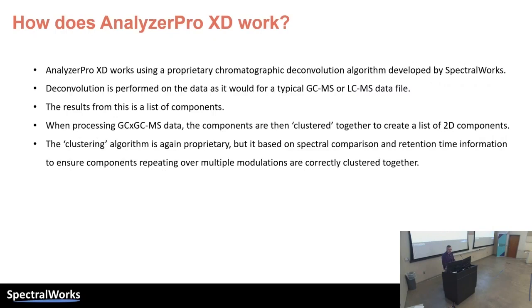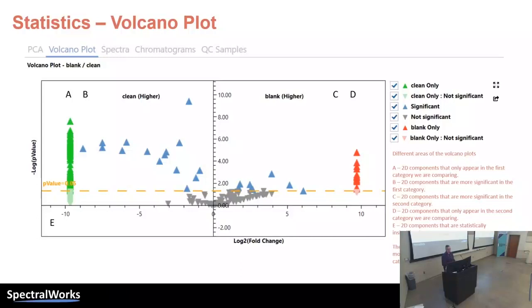AnalyzerPro XD works very well and is quite quick to process the data. From my understanding, it takes your GC×GC data, puts it into 1D chromatograms, and then combines them. They also have a really good statistical package, especially when comparing things like one aircraft class against another — which is exactly what we needed for comparing our bleed-free aircraft against a variety of bleed-air aircraft.